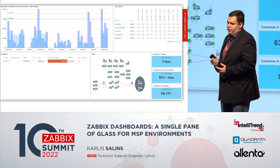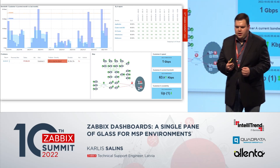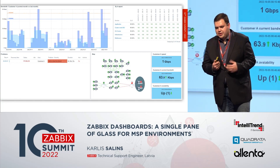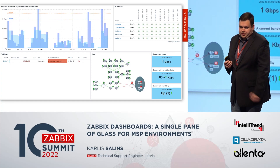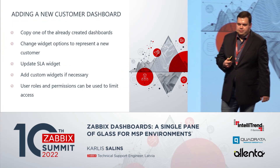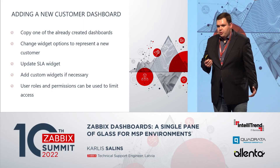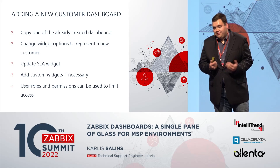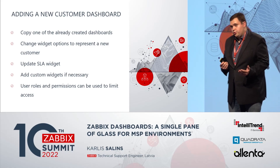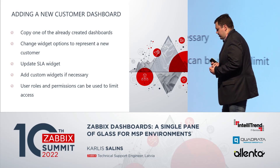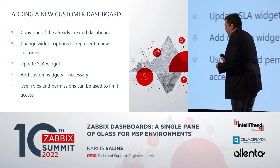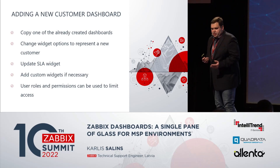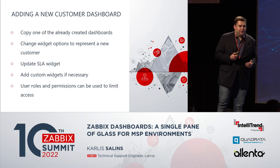My customers also want to see something, so I've created a specific customer dashboard. It consists of their bandwidth usage compared to last month, SLA information showing that we are actually giving them the service, a network map, active problems, and some item values. If I want to duplicate these for multiple customers, I copy the dashboard, change the widget options to the correct host, update the SLA widget with correct information, and add custom widgets if needed. It's also important to understand that you can make a user account in Zabbix that only sees one particular dashboard — no other functionality is available — which is how you display a specific view for one customer.